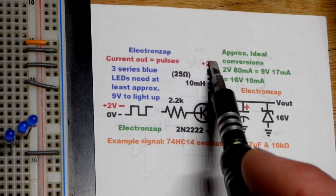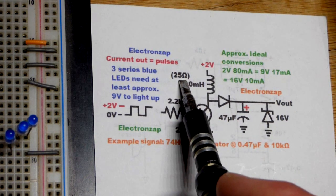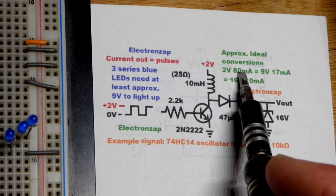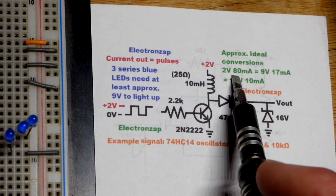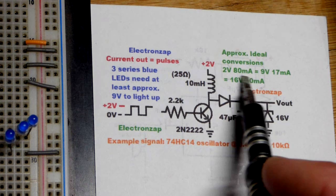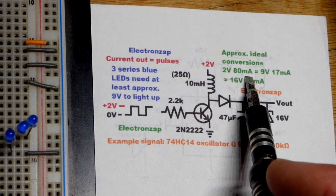So just doing the math here, 2 volts divided by 25 ohms of resistance, I think we can get up to 80 milliamps of current. Of course, that's pulses. That's not steady. But we're just going to do simple math here.